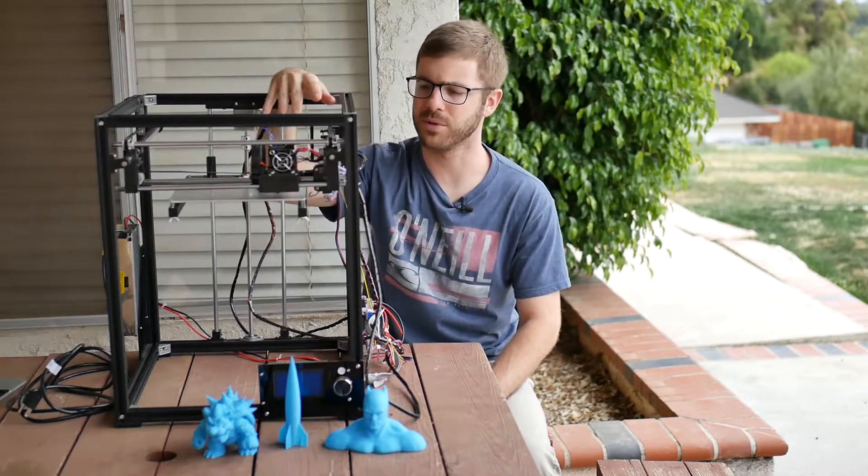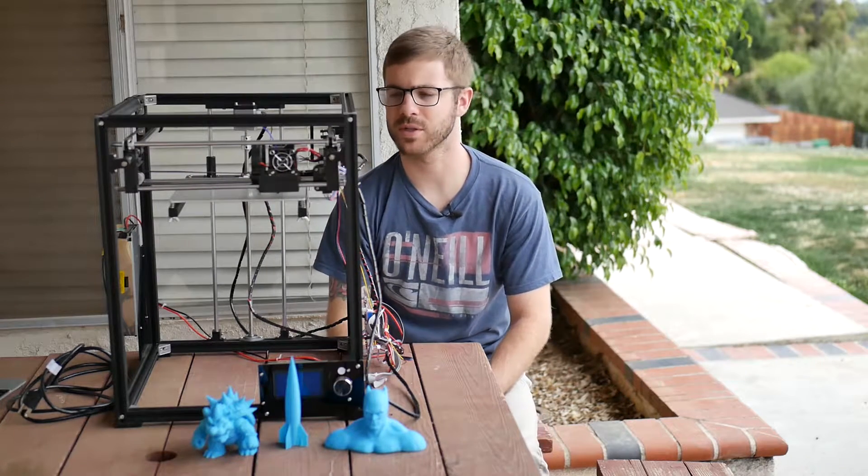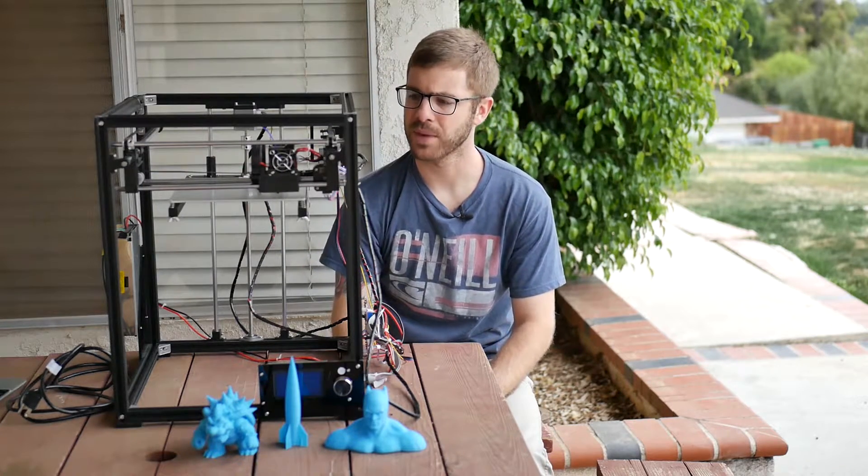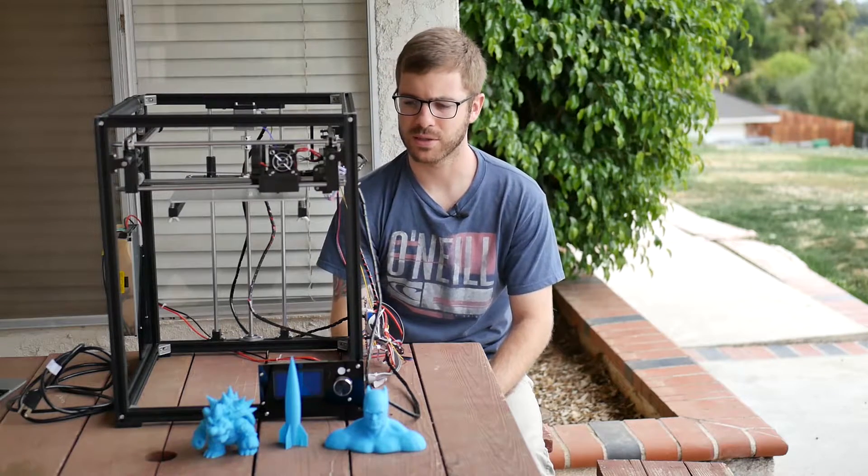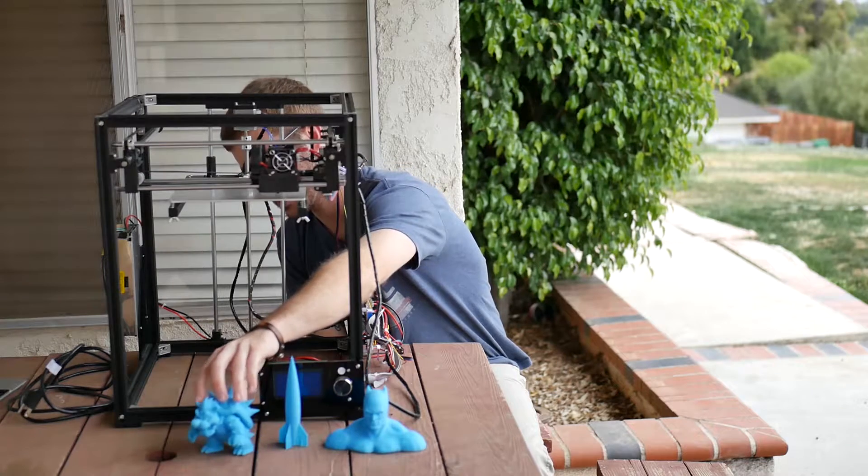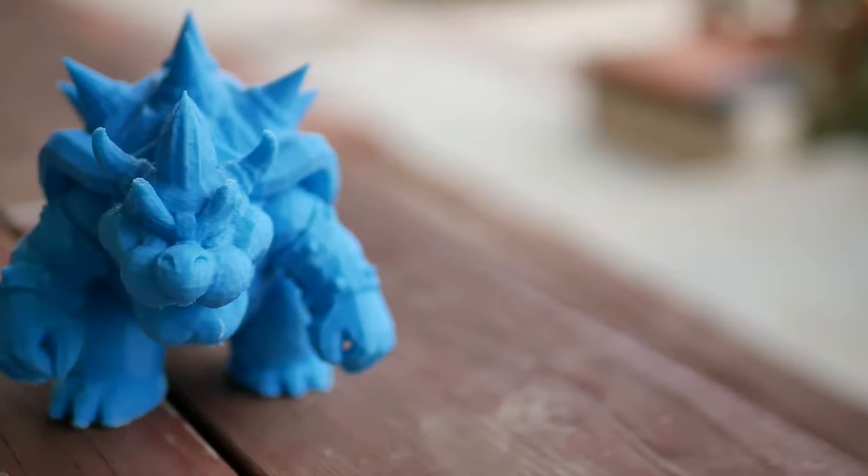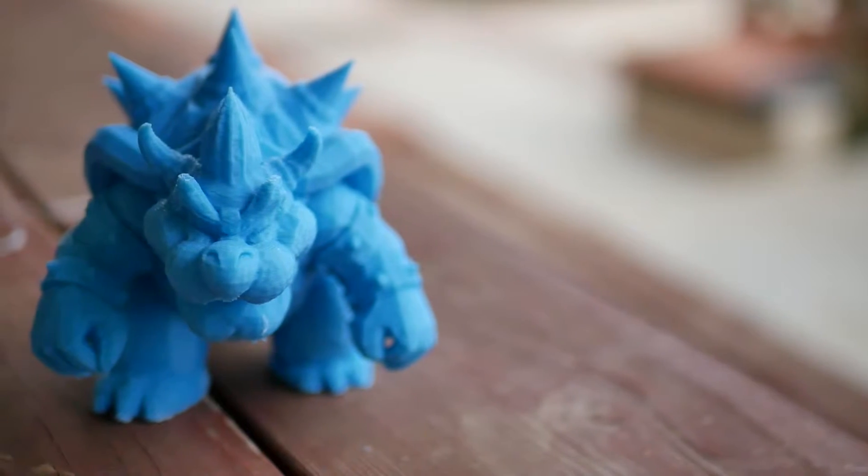Once I had this thing completely assembled I went ahead and printed out a little calibration cube on stream which turned out decent. It wasn't great but it wasn't terrible. After that I went ahead and tried to do a bigger print and I printed this guy right here, Bowser, which I thought was a really awesome model and the print seemed like it was going okay.